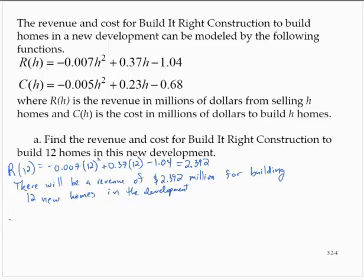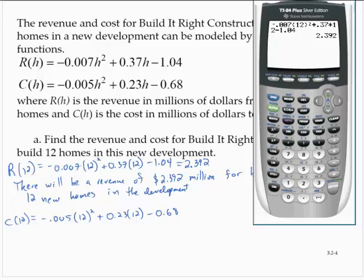The cost would be C of 12, and that would be negative 0.005 times 12 squared plus 0.23 times 12 minus 0.68. Again, let's calculate that: negative 0.005 times 12 squared plus 0.23 times 12 minus 0.68, which is 1.36.